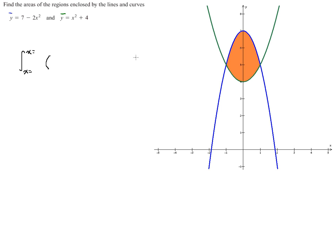And when we find the area between two curves, we subtract, we take the top curve and we subtract the bottom curve. Well, the top curve in this case is this blue curve, which we said was y equals 7 minus 2x squared.